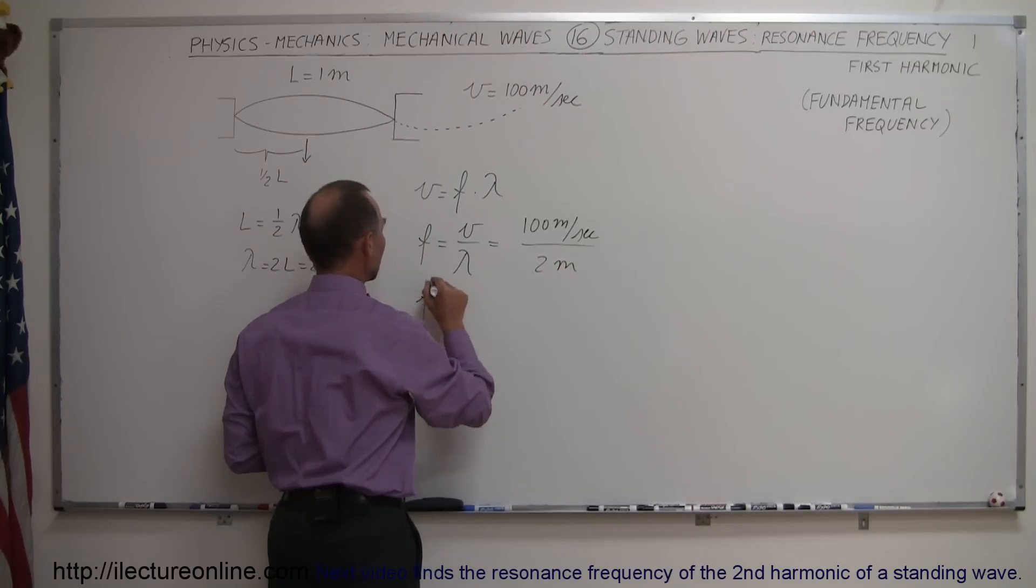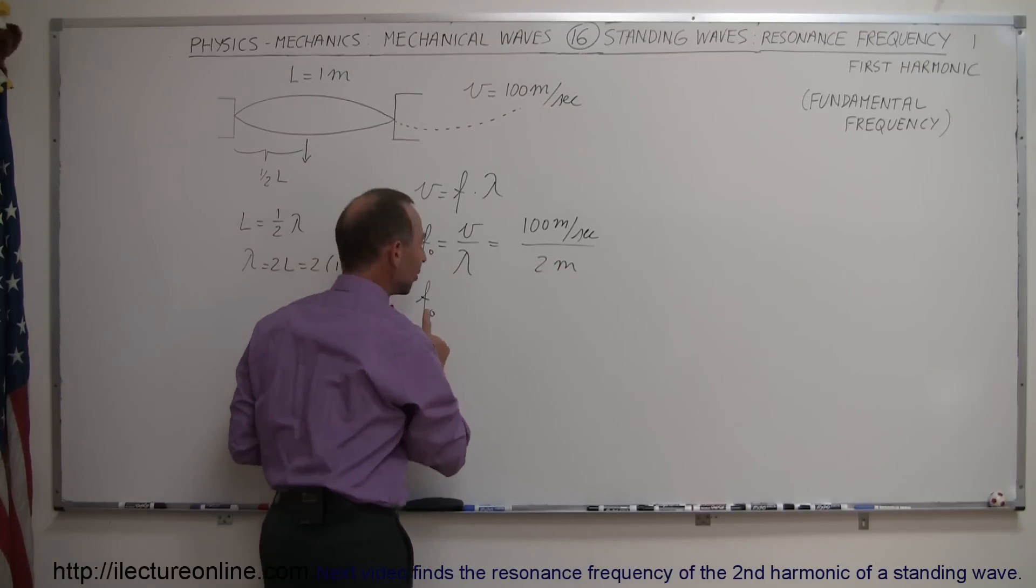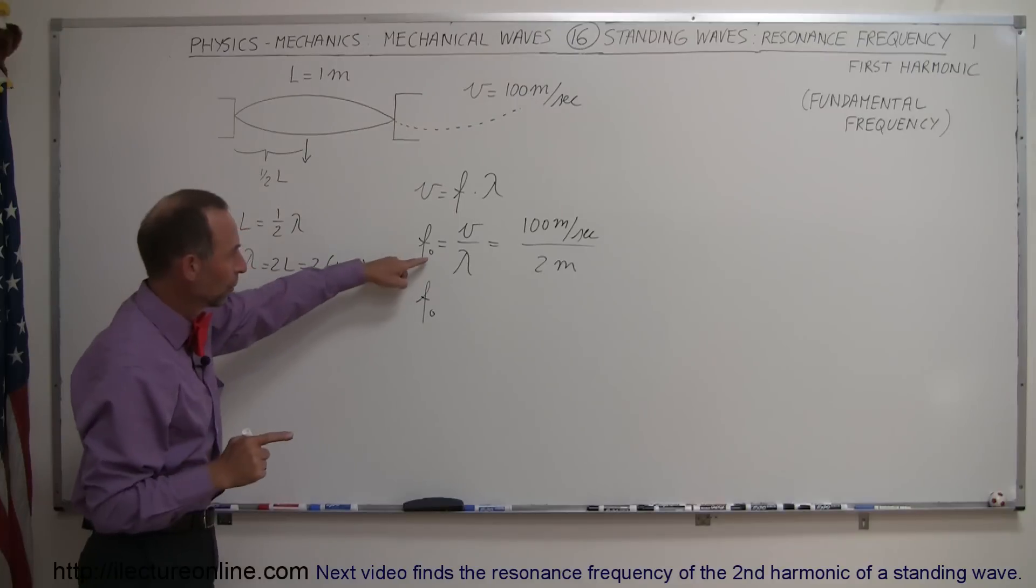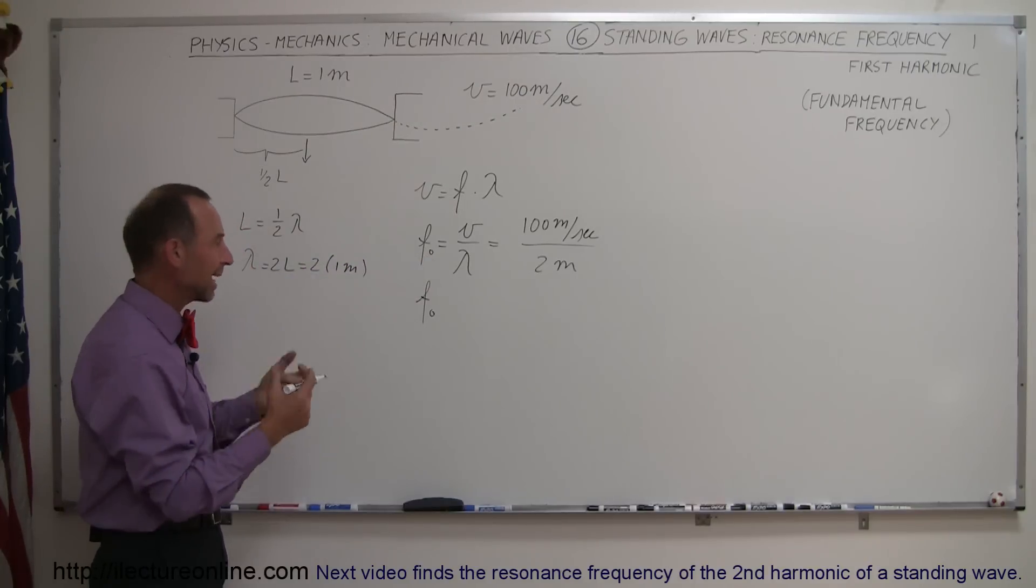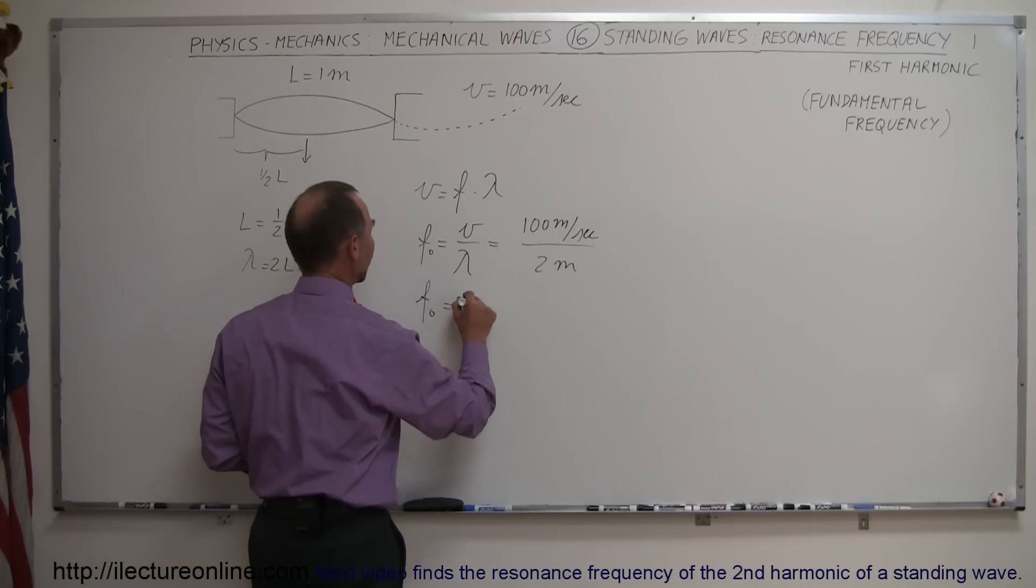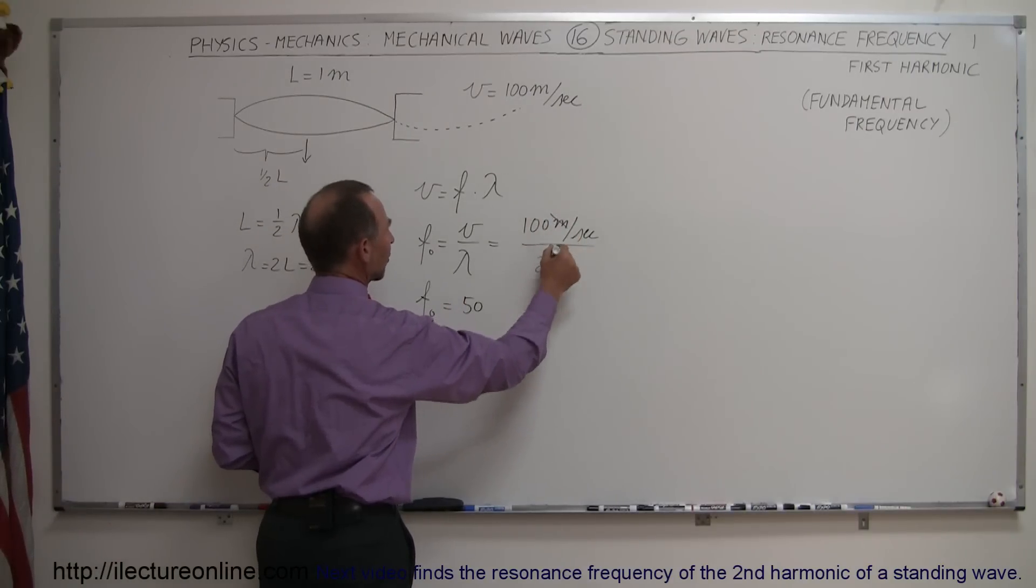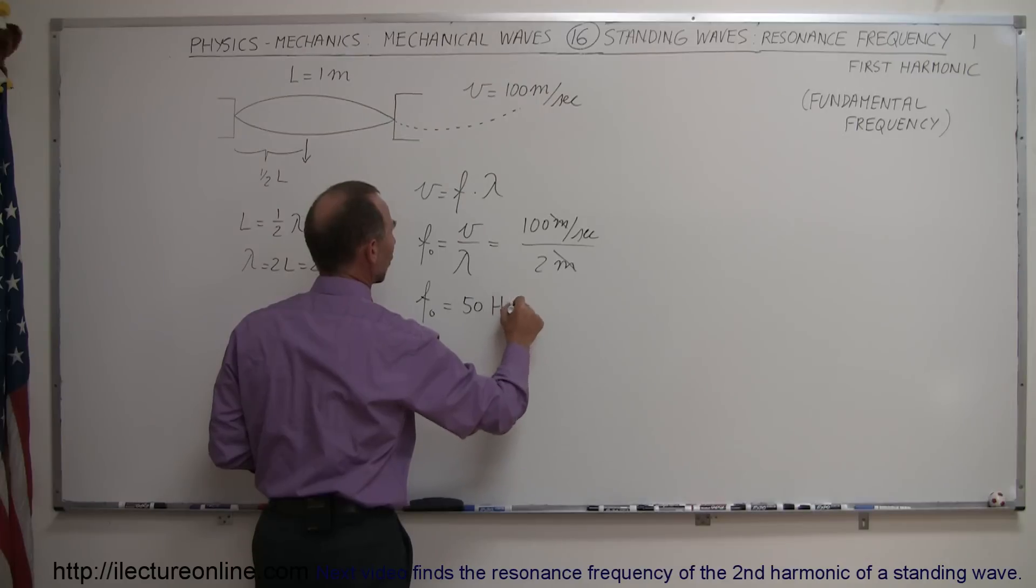So therefore, the frequency, which we're going to call the fundamental frequency—we'll put a little f sub 0 there, that indicates the base frequency or fundamental frequency—would be equal to 50 meters, cancels out, 1 over second is Hertz. So in this case, that would be the fundamental frequency.